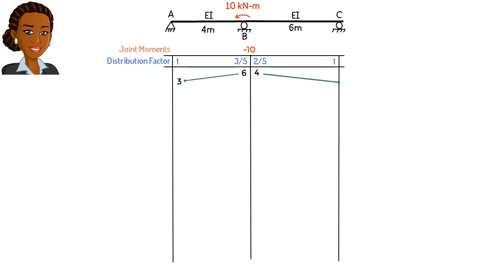Then we carry over half of each added moment value to the other side of the member. This means half of 6 carries over to the other end of member AB, and half of 4 carries over to the other end of BC. These carried over moments make joints A and C unbalanced. Sum of the moments at these joints is no longer zero. So we need to balance them.